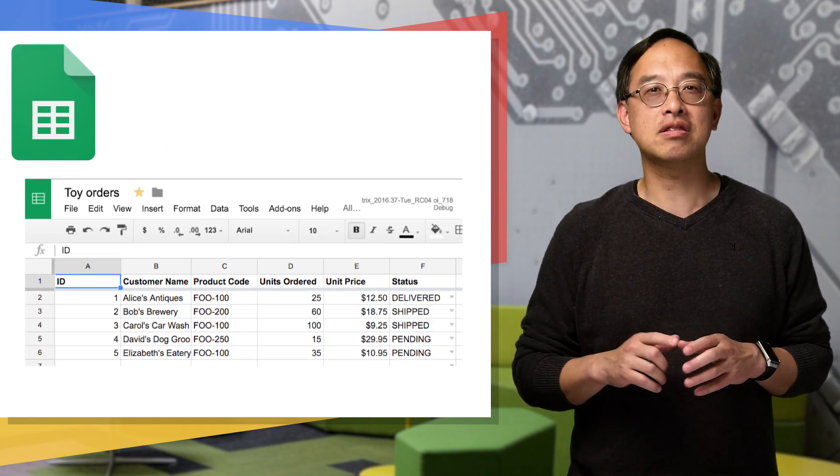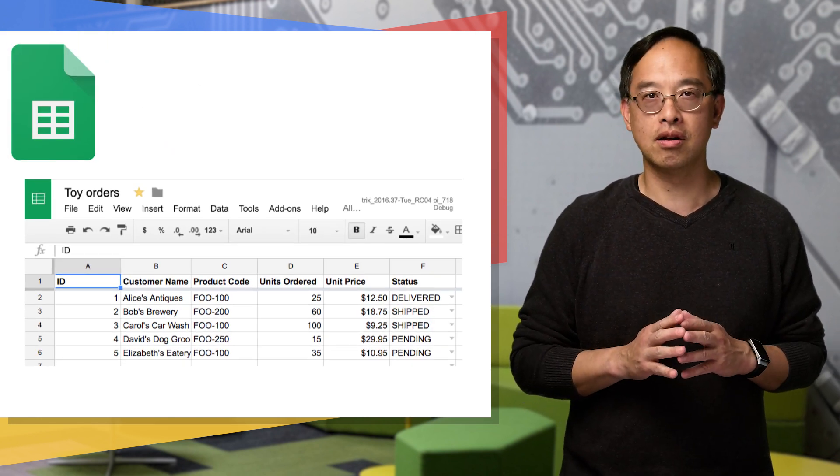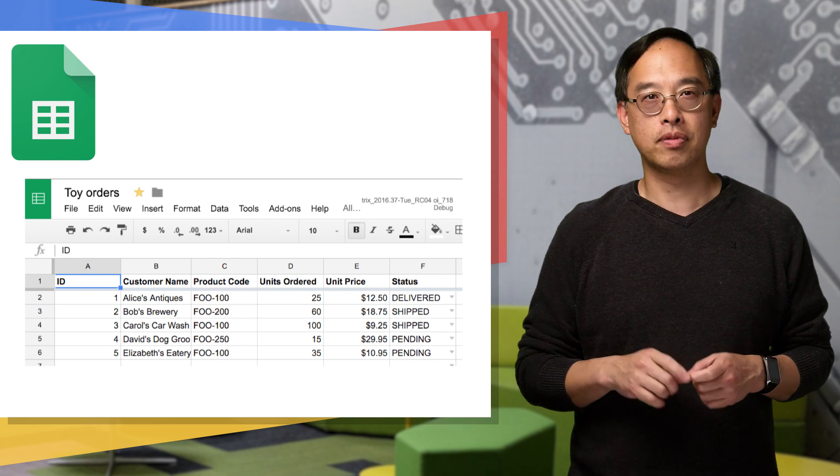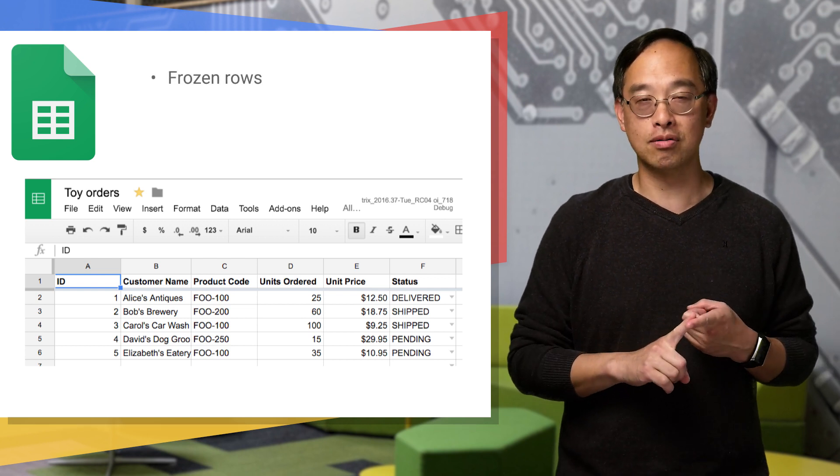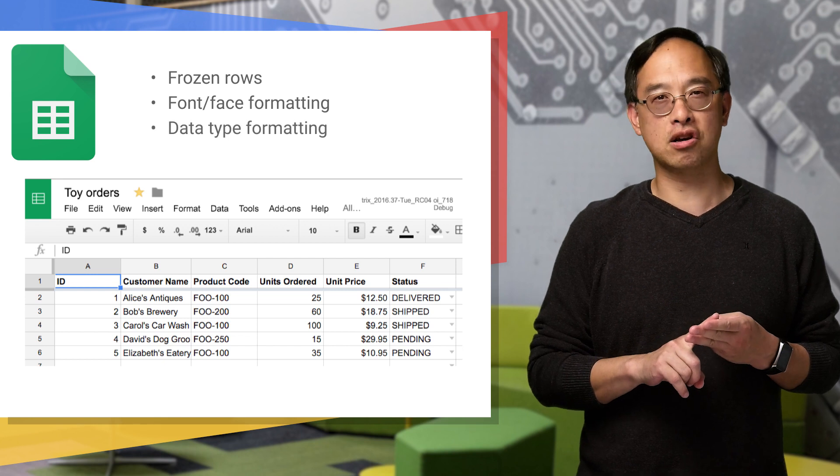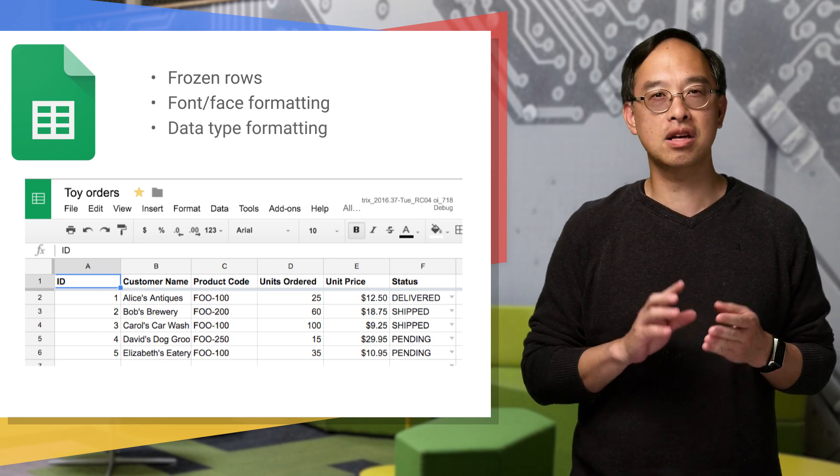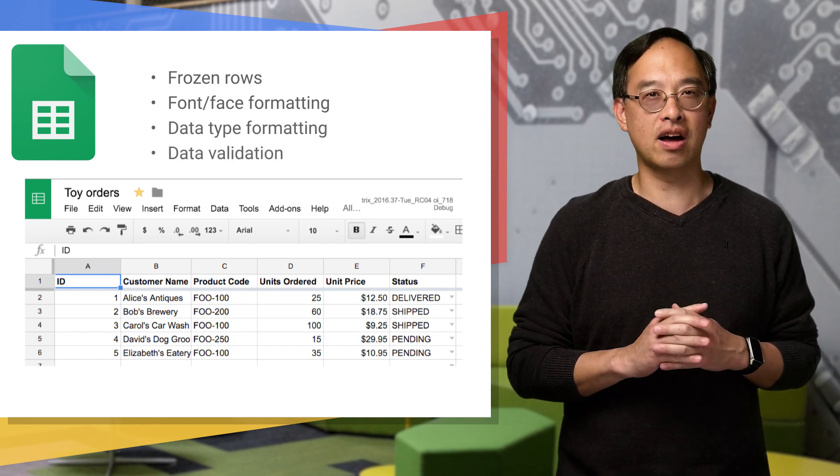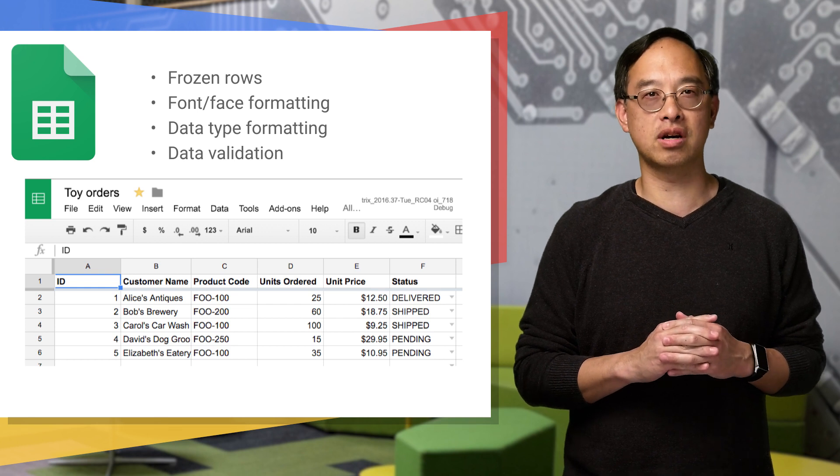To get the sheet to look like this, you have to send formatting commands to the API. For this sample, there are four. One, freeze the top row. Two, bold the top row. Three, format the prices in column E as financial values. And then lastly, adding fixed values and cell validation for the order status in column F.